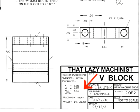Two numbers after the decimal point: plus or minus five thousandths. Three numbers after the decimal: plus or minus two thousandths. Fractional dimensions: plus or minus 1/64. Any angles: plus or minus 15 minutes, or a quarter of a degree. So this 400 thou dimension, having two decimal places, is acceptable anywhere between 405 and 395 thousandths of an inch.